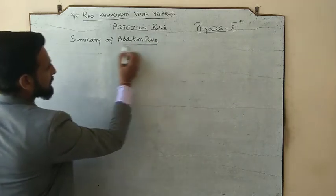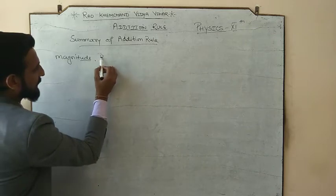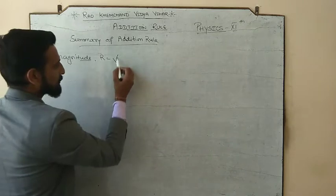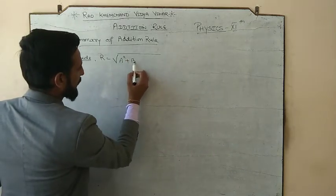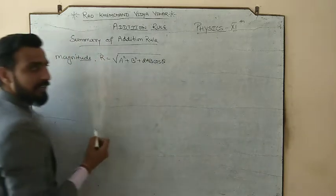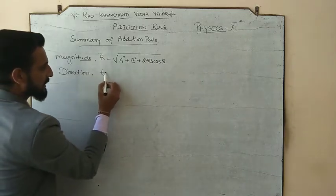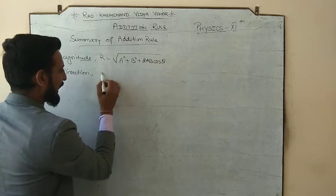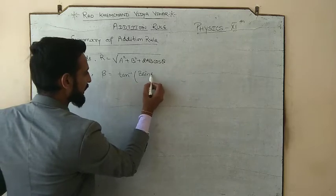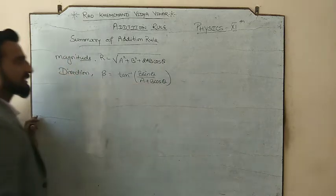Summary of the addition rule: the magnitude of the resultant, whether by triangle addition or parallelogram, is r = √(a² + b² + 2ab cosθ). The direction is tanβ = b sinθ / (a + b cosθ), or beta = tan⁻¹(b sinθ / (a + b cosθ)). Now let us apply some special cases.